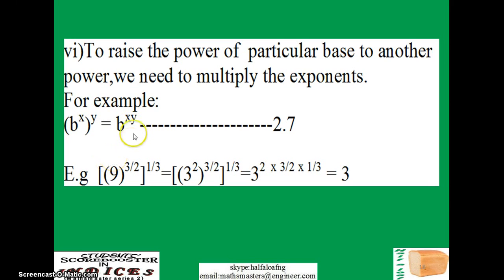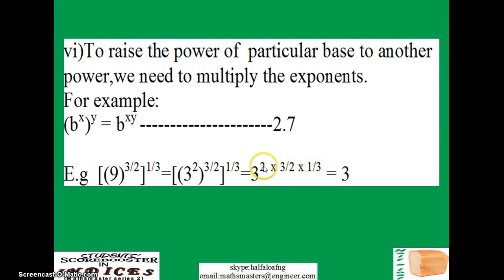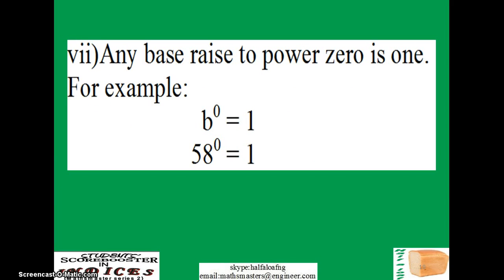Let's give an example of rule 2.7. If I have 9 raised to power 3 over 2, all in brackets raised to power 1 over 3, the first step is to factorize 9 — it becomes 3 raised to power 2 — and every other thing remains the same. To open the two brackets, you just multiply all the exponents as shown. After simplification, you get 3 raised to power 1, which is simply 3.